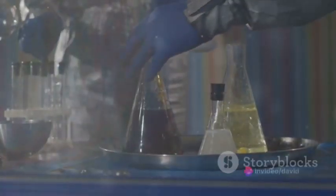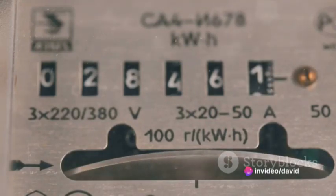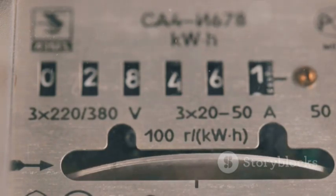And so, the concept of Tafel slope comes into play. The Tafel slope can tell us how the rate of these reactions changes with the applied voltage, thereby providing valuable insights into the efficiency of the electrolysis process.